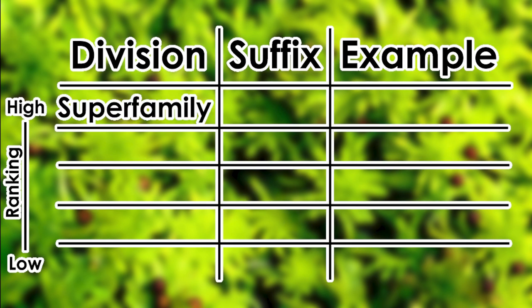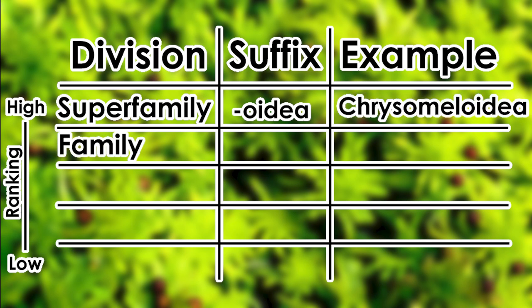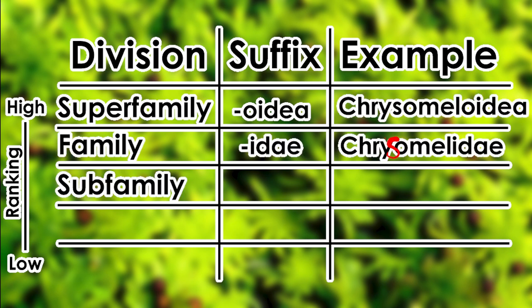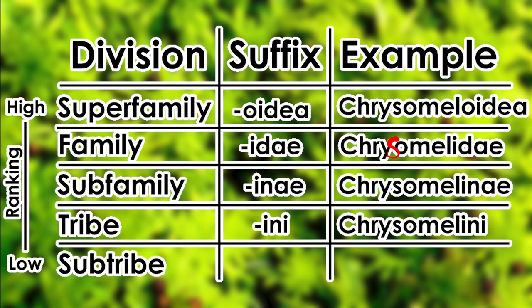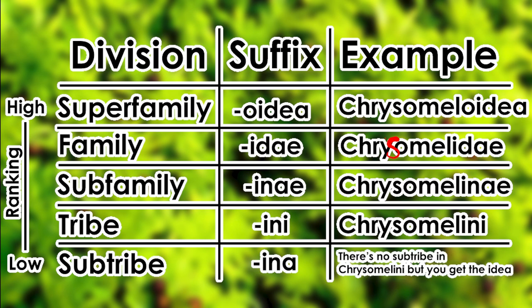Superfamilies have the suffix -oidea, for example Chrysomeloidea. Families have the suffix -idae, for example Chrysomelidae. Subfamilies have the suffix -inae, for example Chrysomelinae. Tribes have the suffix -ini, for example Chrysomelini. And finally subtribes have the suffix -ina. I don't believe Chrysomelinae has any subtribes, but I'm sure you get the idea.